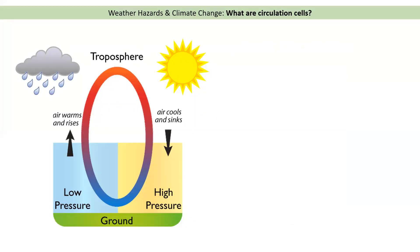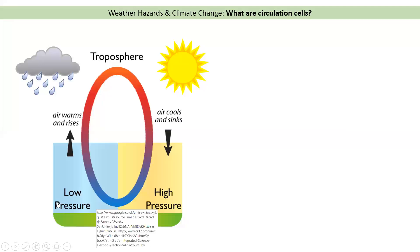Before we look at the circulation cells, we need to understand what we mean by high and low pressure. With low pressure, the air is very light. What that means is that water on the surface of the earth — from rivers, the sea, or lakes — can evaporate and rise up. As it evaporates, it eventually condenses and forms clouds, giving us rain. So with low pressure, the air is rising, there's nothing to hold it down, it rises up, forms clouds, and we get rainfall. So next time you see a cloudy or rainy day, that's low pressure.